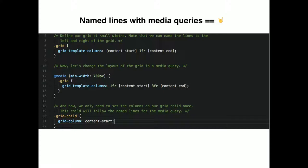You have what are called grid lines and grid areas. Imagine your grid has lines — one on the very left, then another after the first track, and so on. You can name those lines and reference them later. That could be useful because you can change the placement of those lines based on breakpoints, and your properties will follow wherever those named lines are. I haven't used this in production because it feels like an over-abstraction.